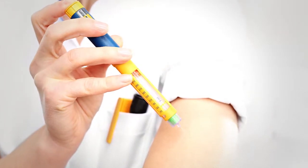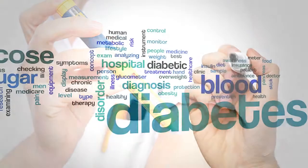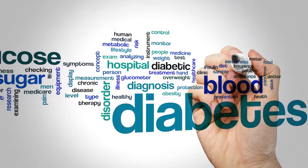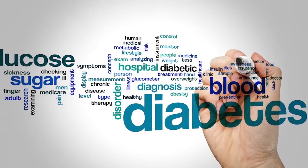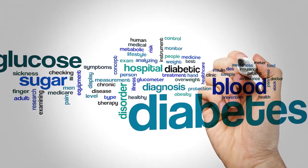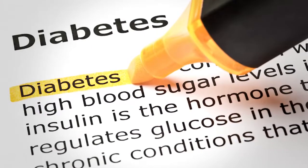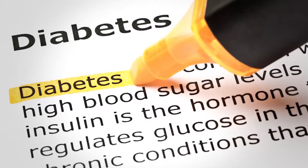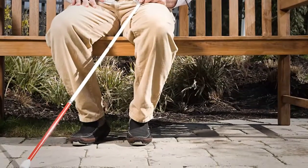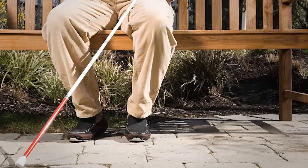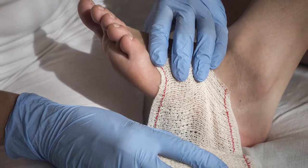Diabetes is a disease of excess, specifically an excess of glucose, which ultimately ravages the body. But why exactly does too much glucose cause symptoms ranging from blindness to neuropathy to delayed wound healing?